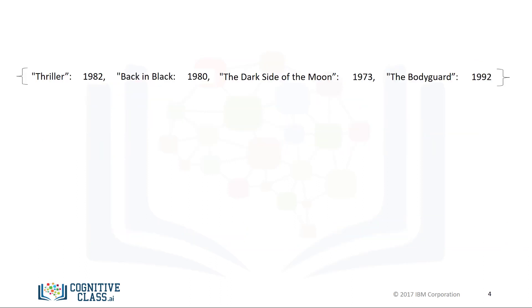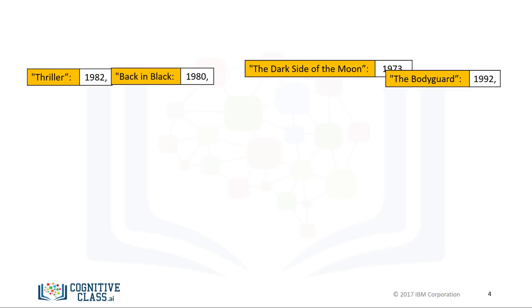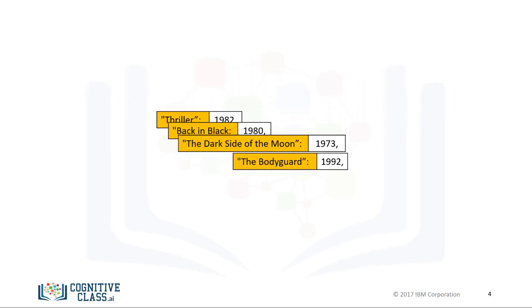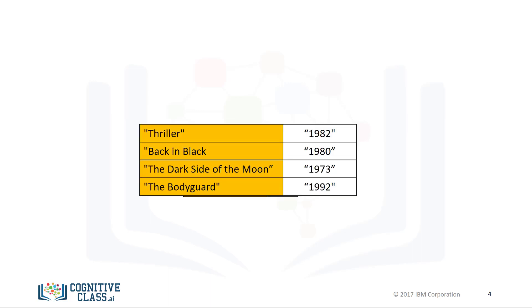Consider the following example of a dictionary. The album title is the key and the value is the release date. We can use yellow to highlight the keys and leave the values in white. It is helpful to use a table to visualize a dictionary, where the first column represents the keys and the second column represents the values.